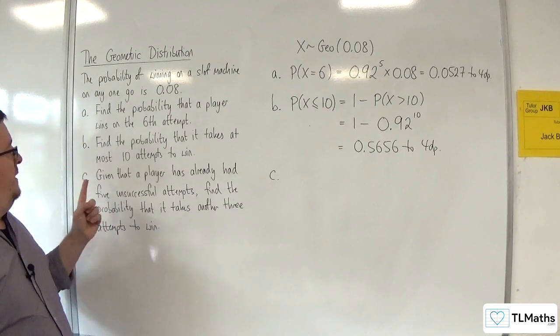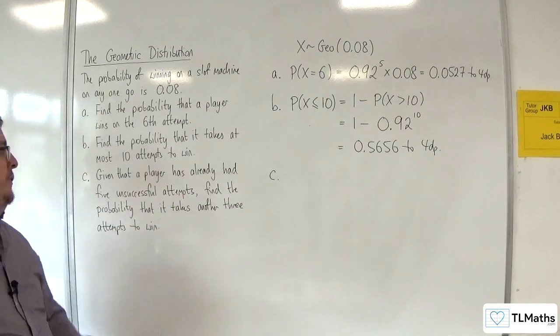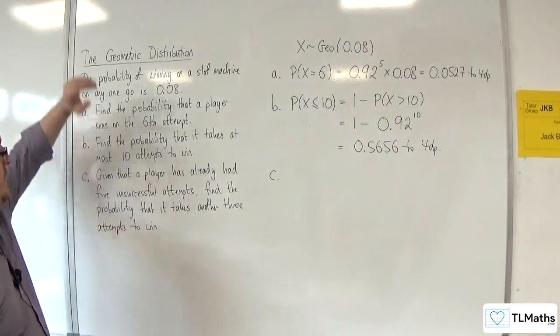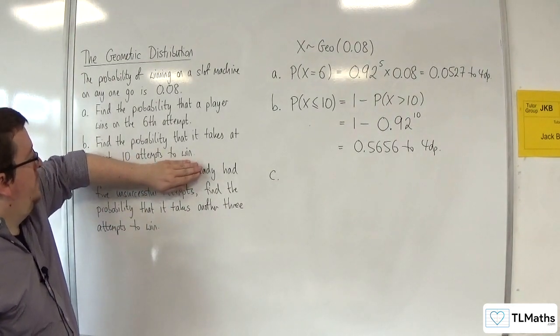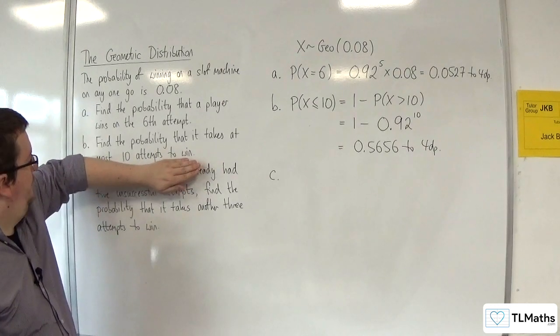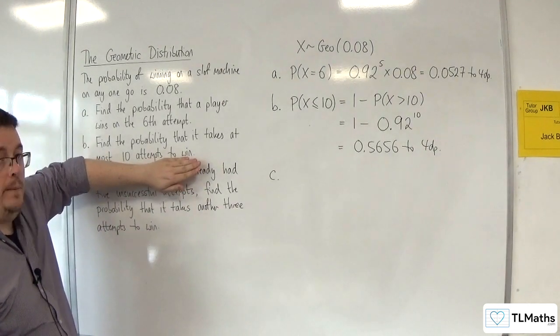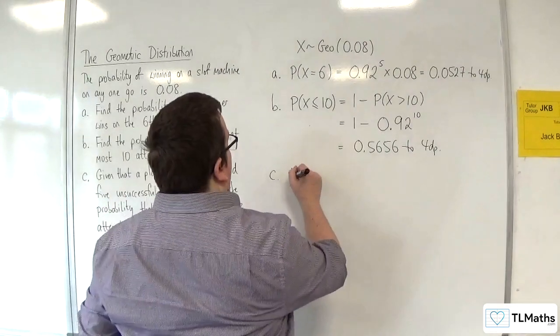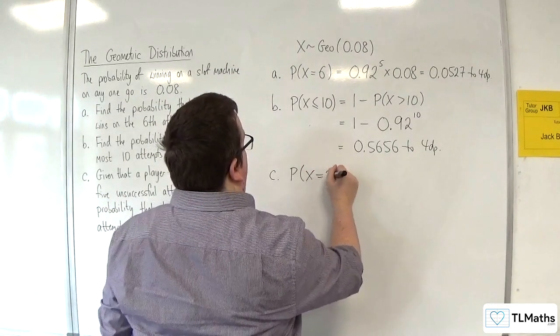So, actually, given that a player has already had 5 unsuccessful attempts, it doesn't matter if they've had 5 unsuccessful attempts. So, the question is just asking, find the probability that it takes 3 attempts to win. So, this question is just the same as me asking, what's the probability of X being equal to 3?